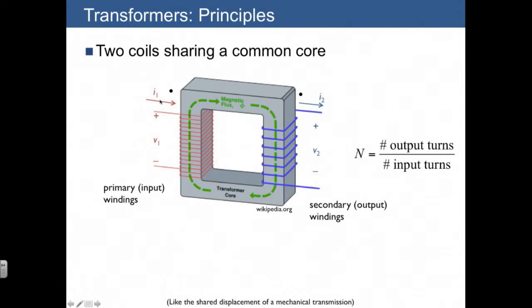We've defined a voltage drop across the primary winding as well as a current going in, and a voltage drop across the secondary winding and a current coming out.